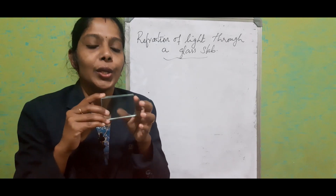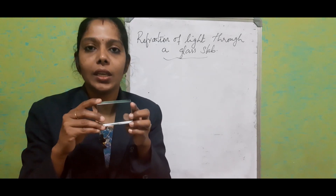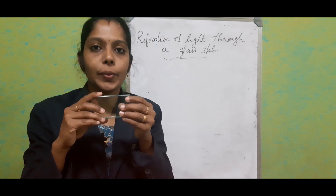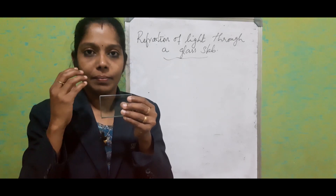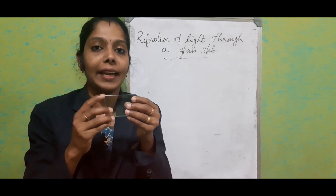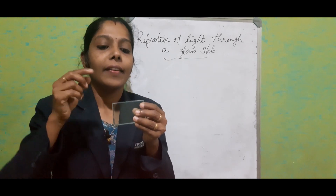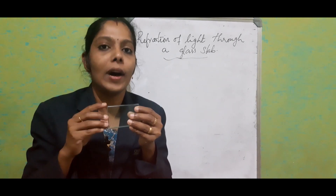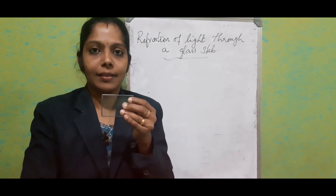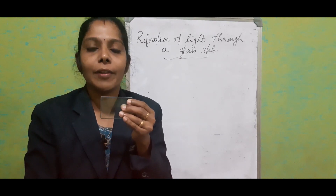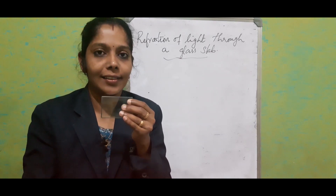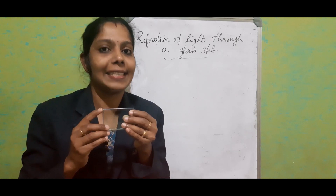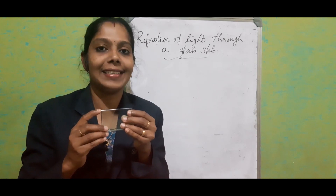So here we are going to see what happens to the path of the light ray when it is incident from one side, and how it comes out from this glass slab. Let's see that.